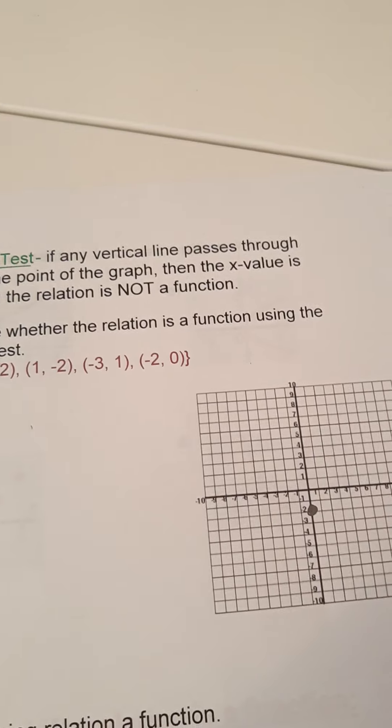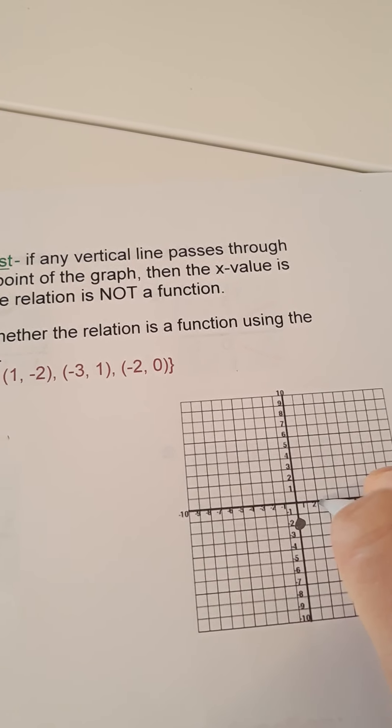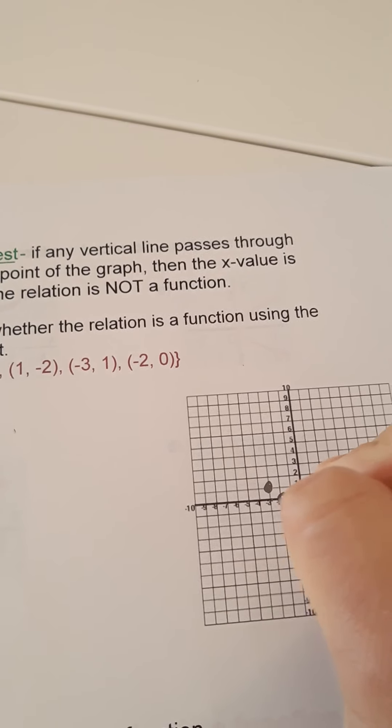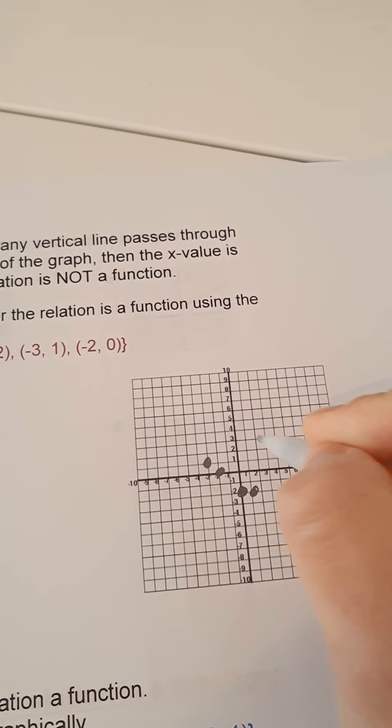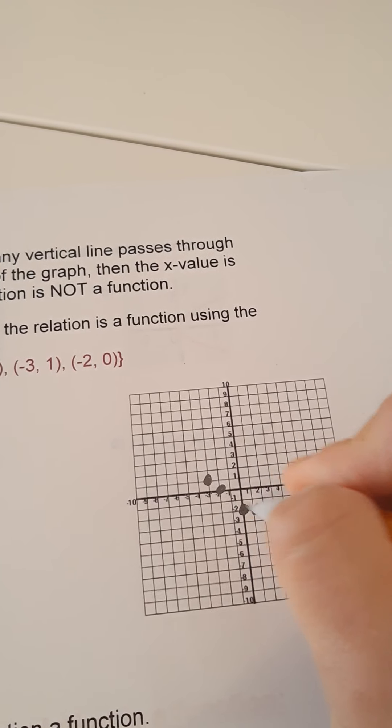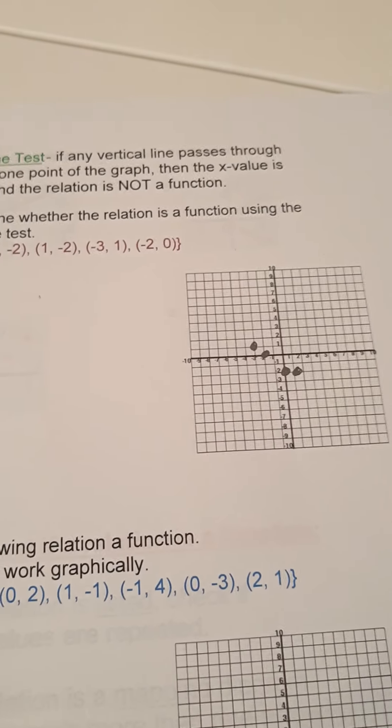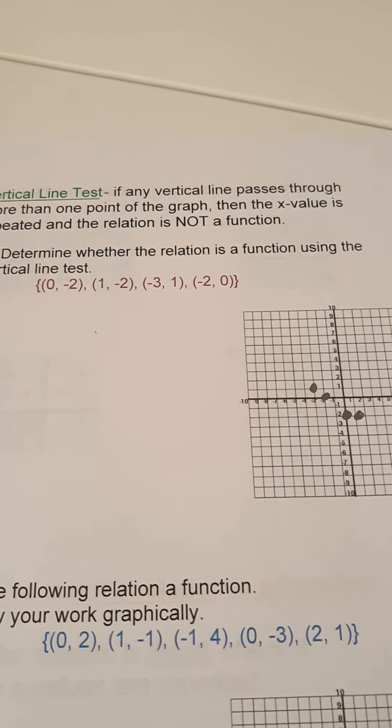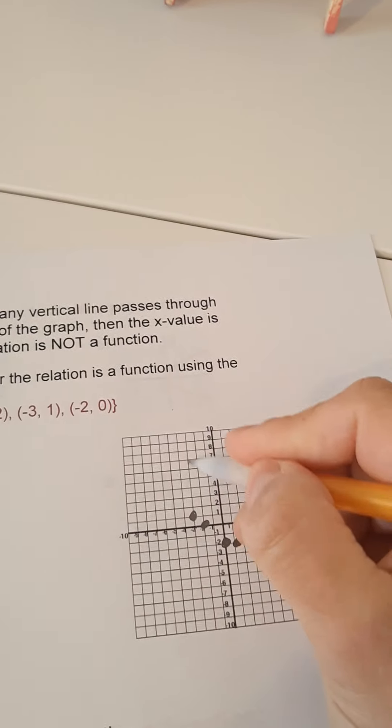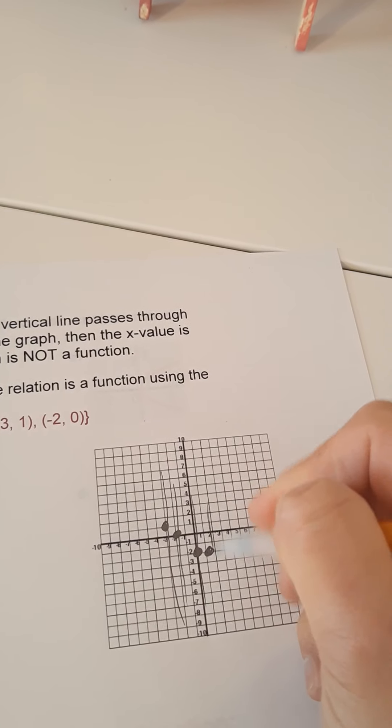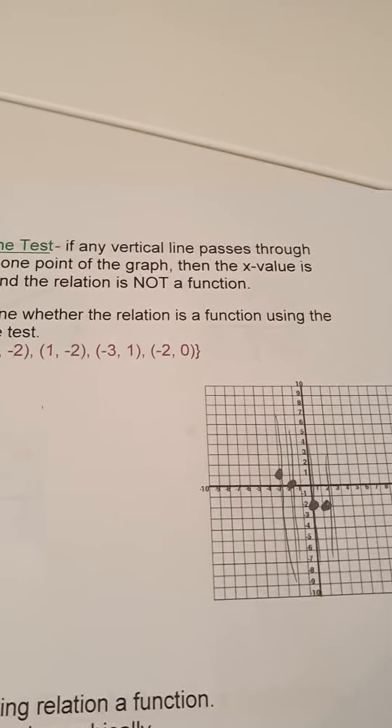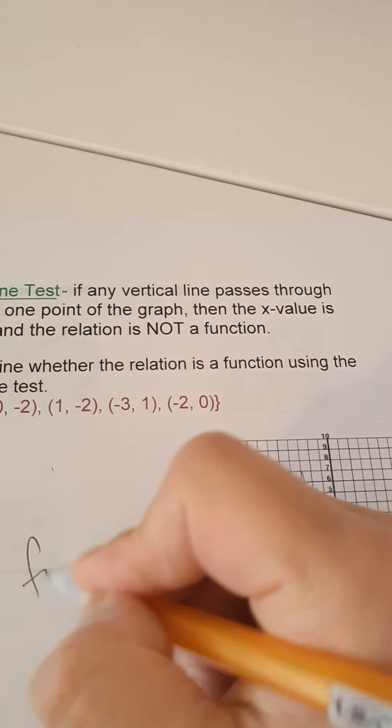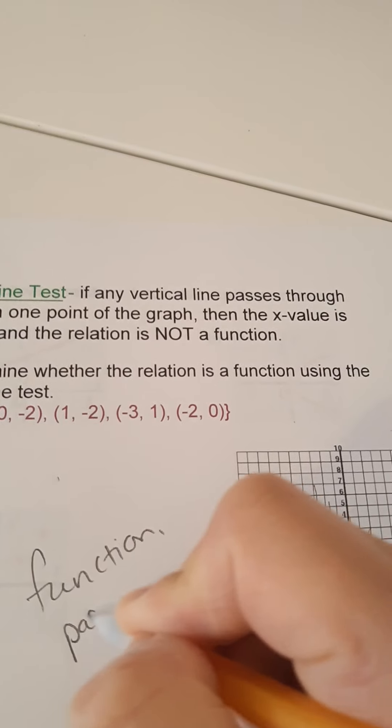So, determine if the relation is a function using the vertical line test. So, what you're doing is you're plotting the points. So, 0, negative 2, 1, negative 2, negative 3, 1, and negative 2, 0. So, then what we do in a case like this is we don't connect the dots. What you can do is draw a vertical line through every point. Each point only has the line going through it once. It is a function because of that. And you would say it passes the vertical line test.